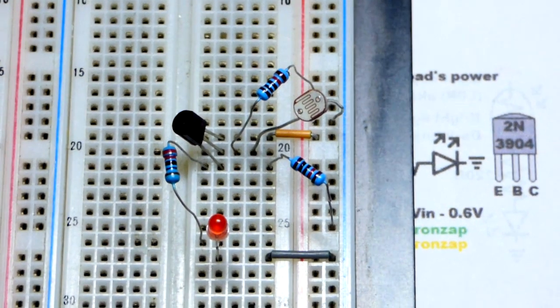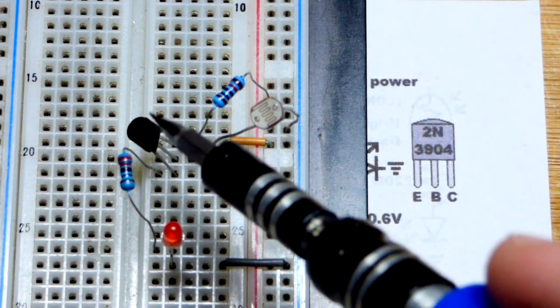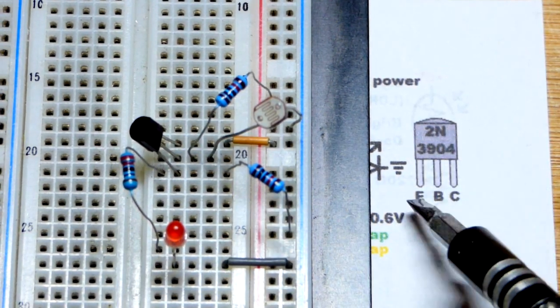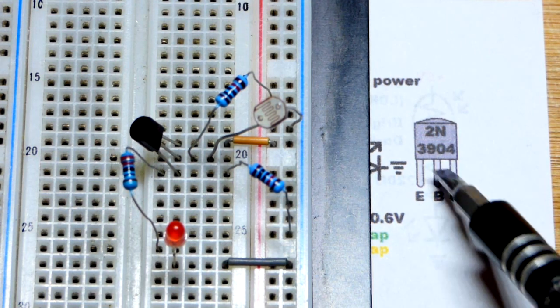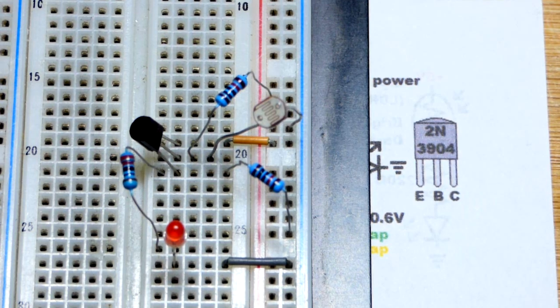There is the pin layout for the 2N3904. And as always, if it's a bipolar junction transistor, and it starts with 2N, it probably has this pin layout. All the ones that I've come across have this pin layout, where you're looking at the flat side, emitter to the left, base to the middle, collector to the right.